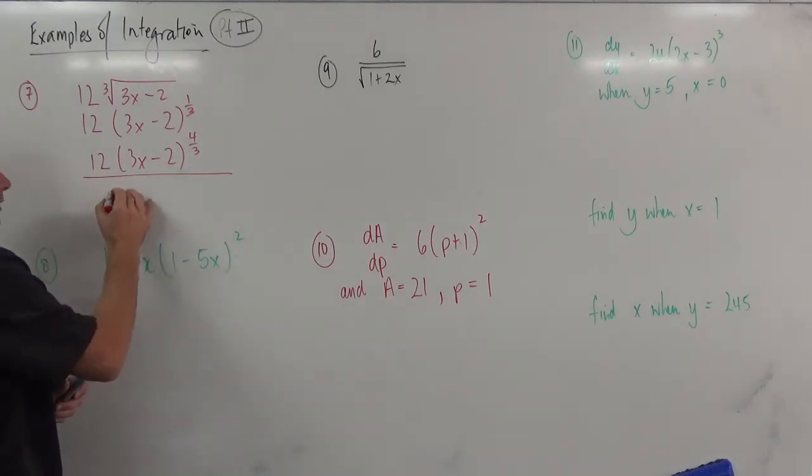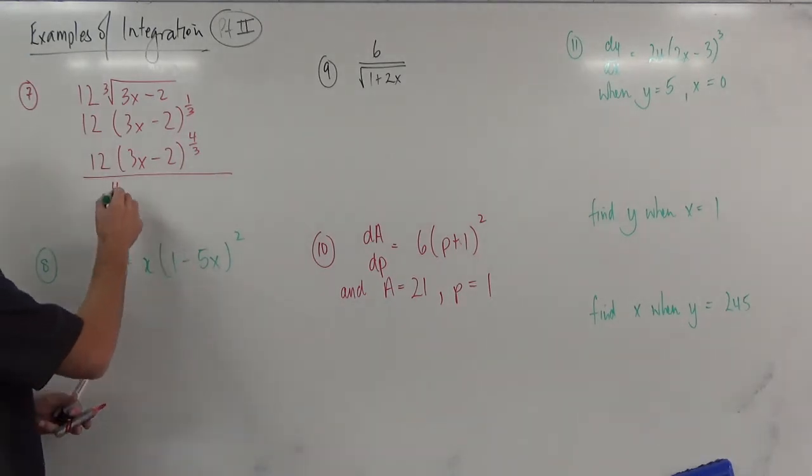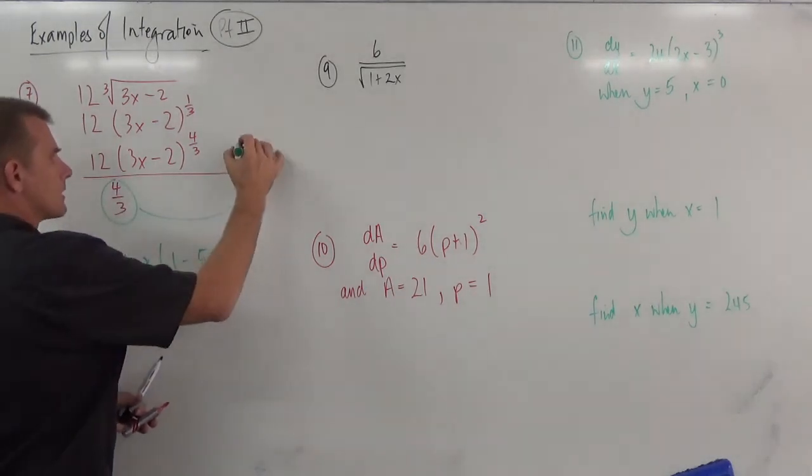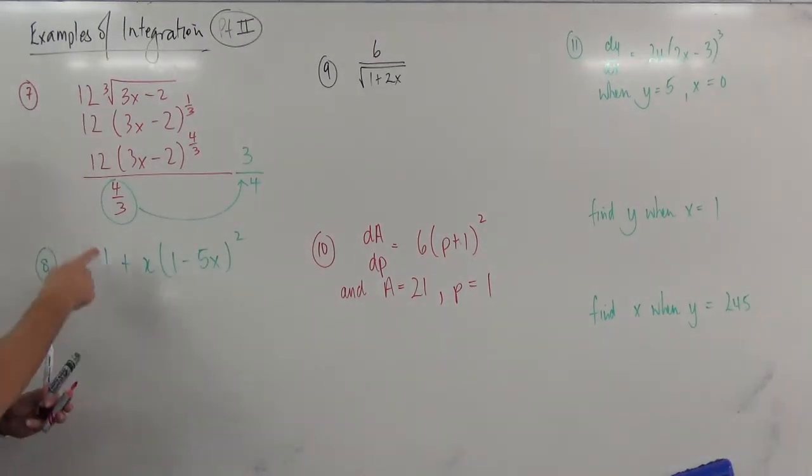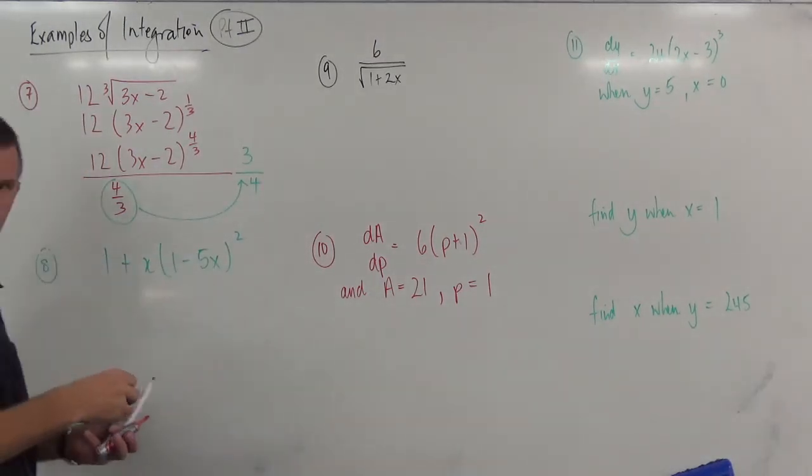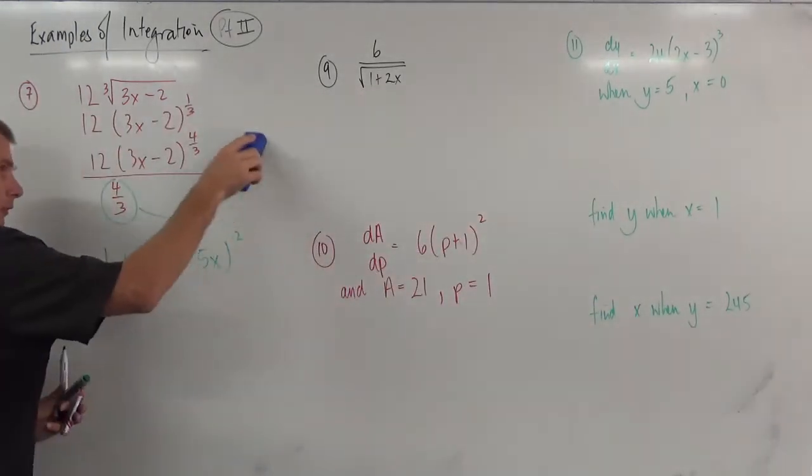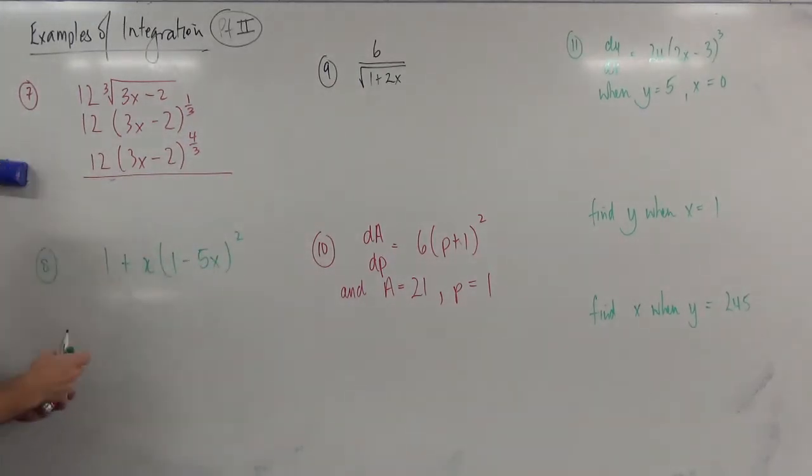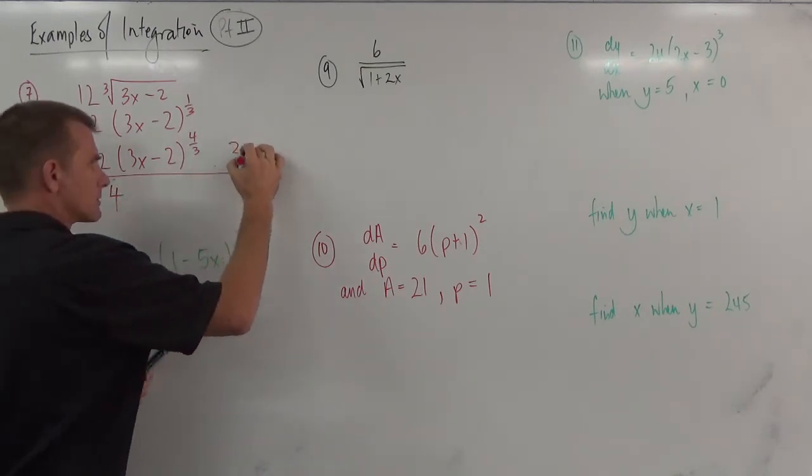Now here's the trick. If we're dividing by 4 over 3, that's the same as multiplying by 3 over 4. Okay, I'll do it in a different way first. If we divide by 4 over 3, that there, follow the green highlight, is the same as taking that, bringing it up here, and saying 3 over 4.